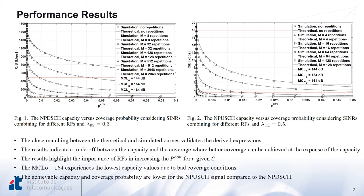We can also observe, as expected, that the repetition factor increases peak coverage for a given capacity. The horizontal red lines in both figures represent the maximum achievable capacity for different coverage classes defined by the maximum coupling losses. We can see that the 164 dB maximum coupling loss experiences the lowest capacity values due to bad coverage conditions. Finally, the achievable capacity and coverage probability are lower for the uplink channel compared to the downlink, which can be attributed to the lower power adopted in the uplink and the smaller bandwidth options.